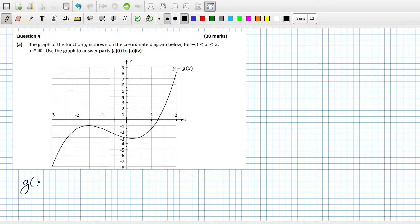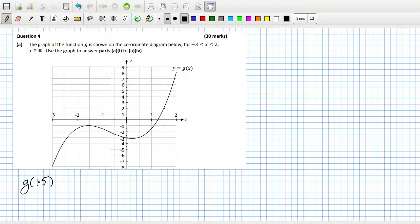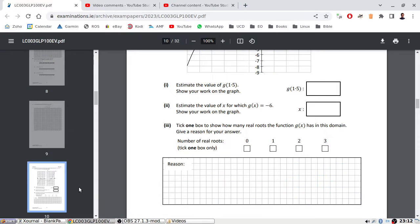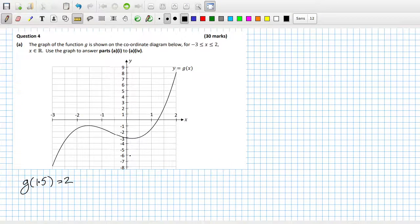g of 1.5. 1.5, that looks like 2 to me, pretty spot on. Estimate the value of x for which g of x equals minus 6. Minus 6 would be here, so that would be about there.